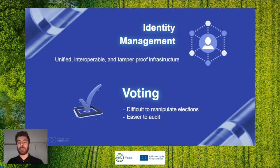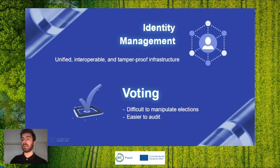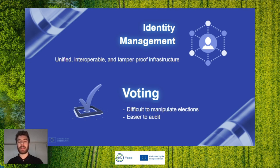On the governance side, the identity space is very fragmented. Blockchain can offer a unified, interoperable, tamper-proof infrastructure for digital identities. Thanks to blockchain's properties and encryption, you can verify identities without disclosing too much data. Another very interesting application is voting — thanks to smart contract logic, we can make voting much more transparent and fraud-resistant. Instead of counting votes for days and requesting recounts, we can count votes in a matter of seconds.